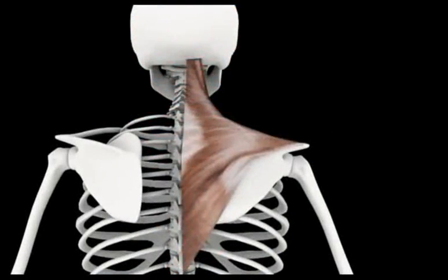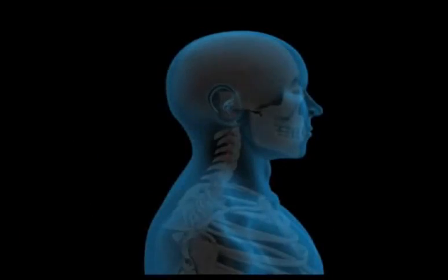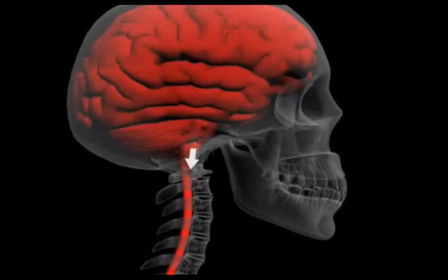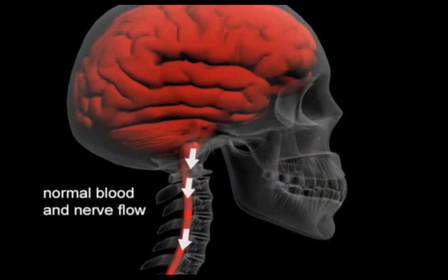The trapezius muscle receives its vital information from the spinal accessory nerve, cranial nerve 11, which emanates in the brainstem and upper cervical spine.